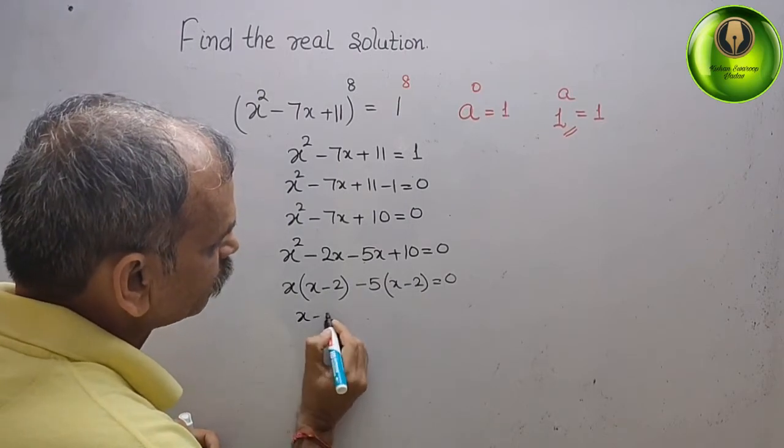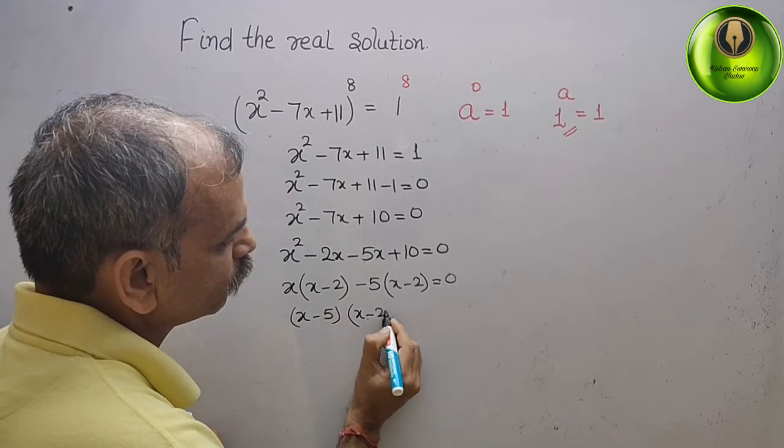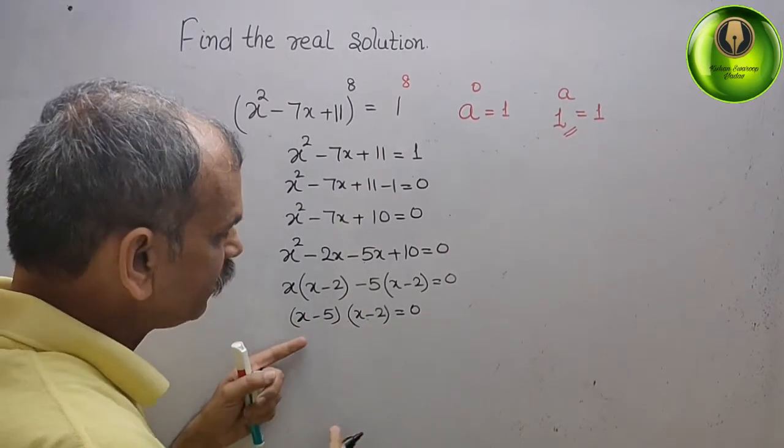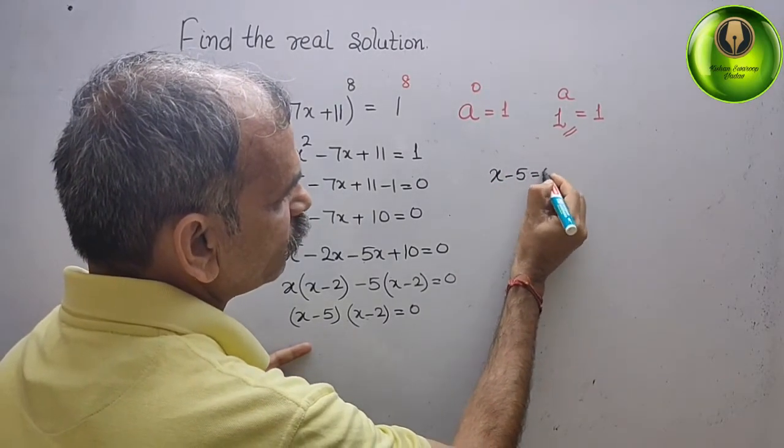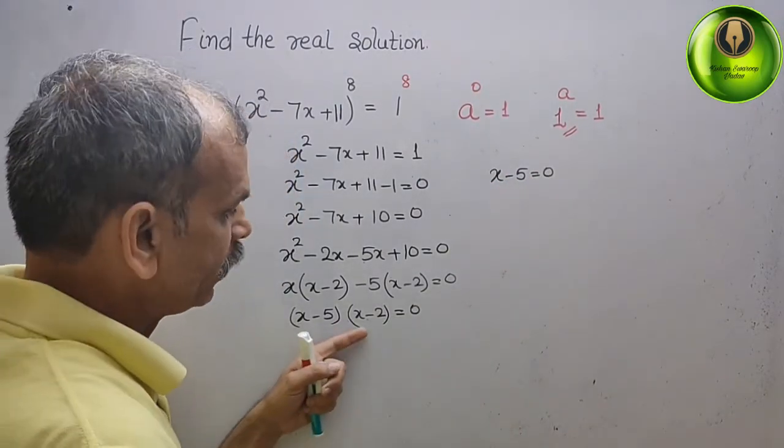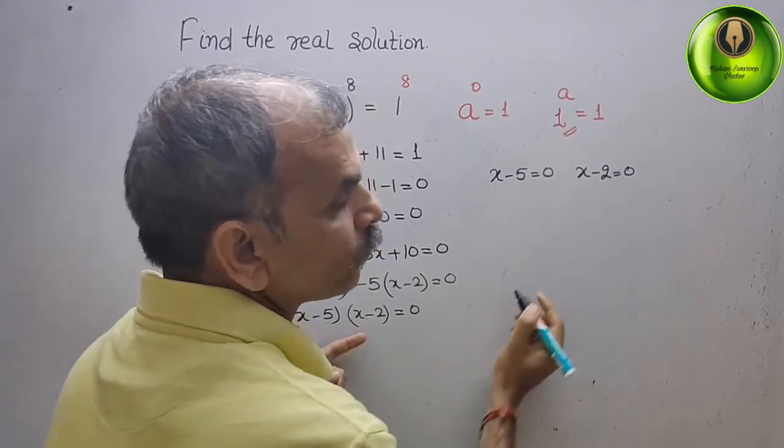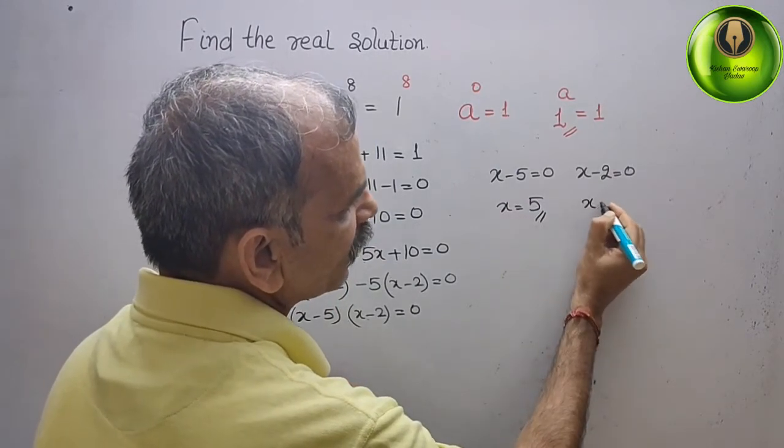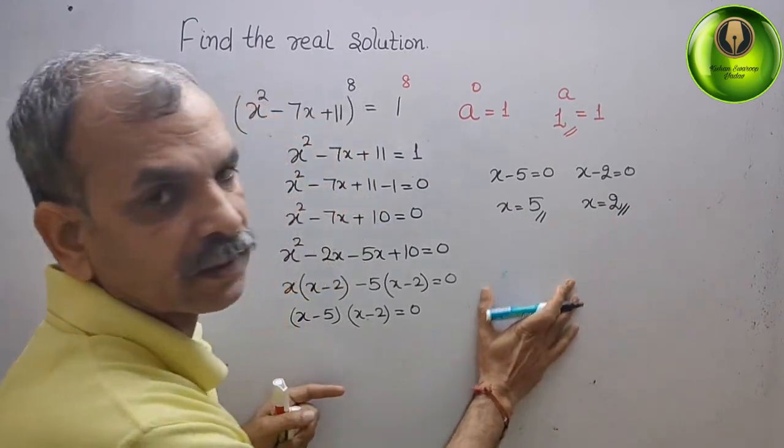That means that x minus 5 into x minus 2, that gives you 0. So now we can say that x minus 5 is equal to 0, or x minus 2 is equal to 0. So x is equal to 5 here, and here we can say x is equal to 2. So these are the two answers.